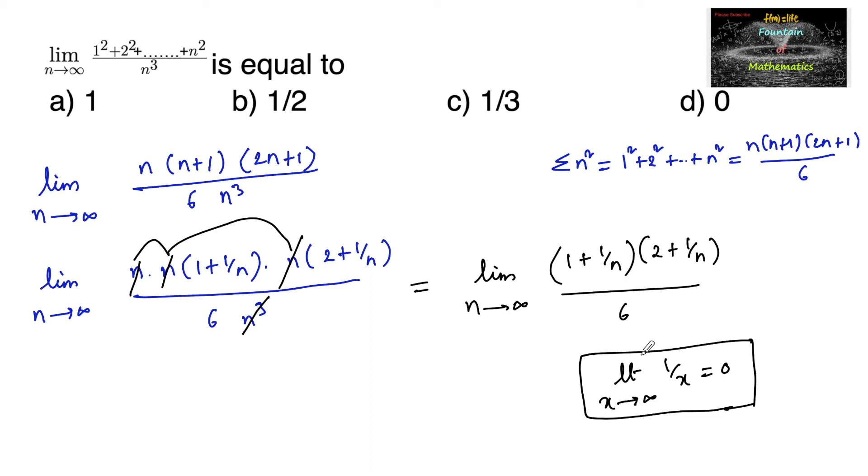So we can use this formula. Limit n tends to infinity 1 upon n will become 0, and 1 upon n will become 0 here also. So we can substitute the limit: 1 plus 0 into 2 plus 0 upon 6, that is 1 into 2 upon 6, which is 1 upon 3. So we can go with answer option C.